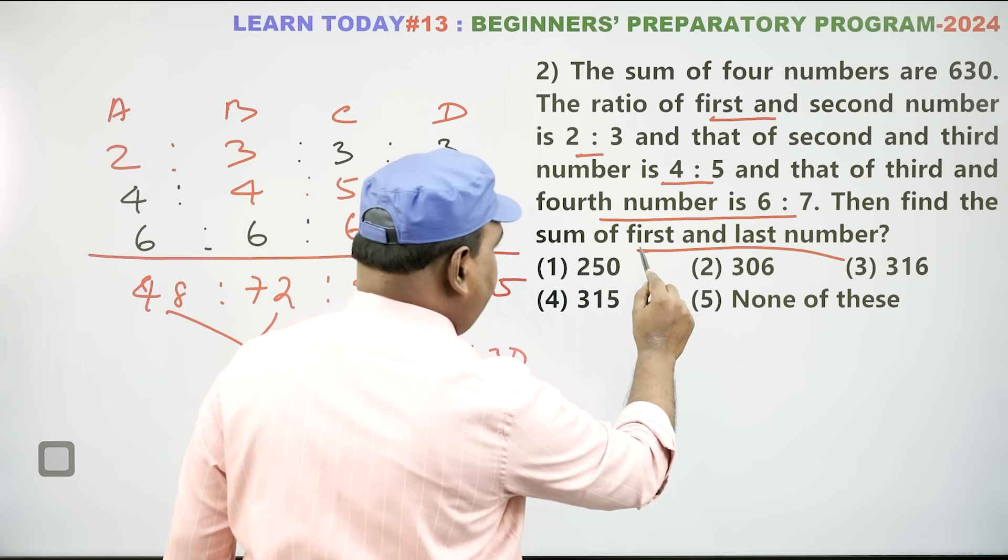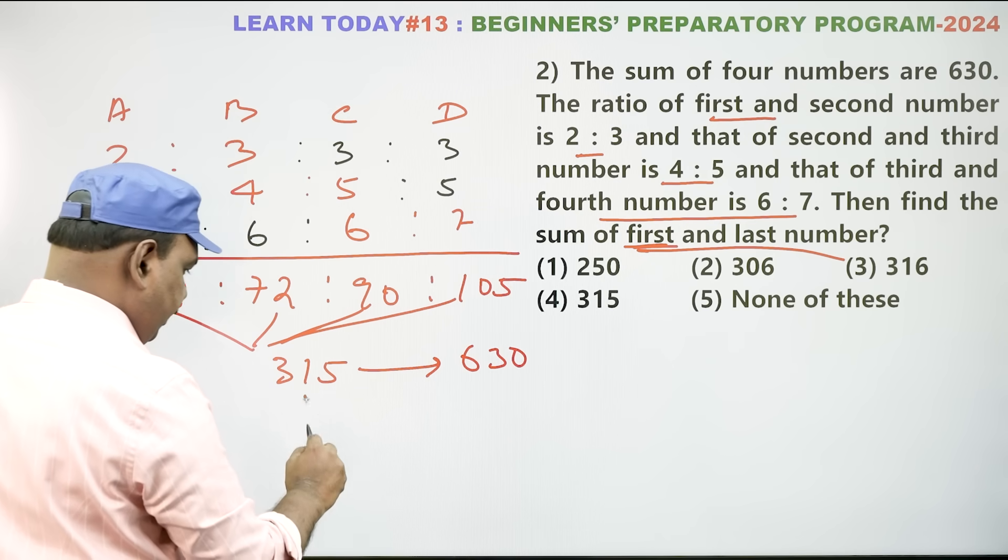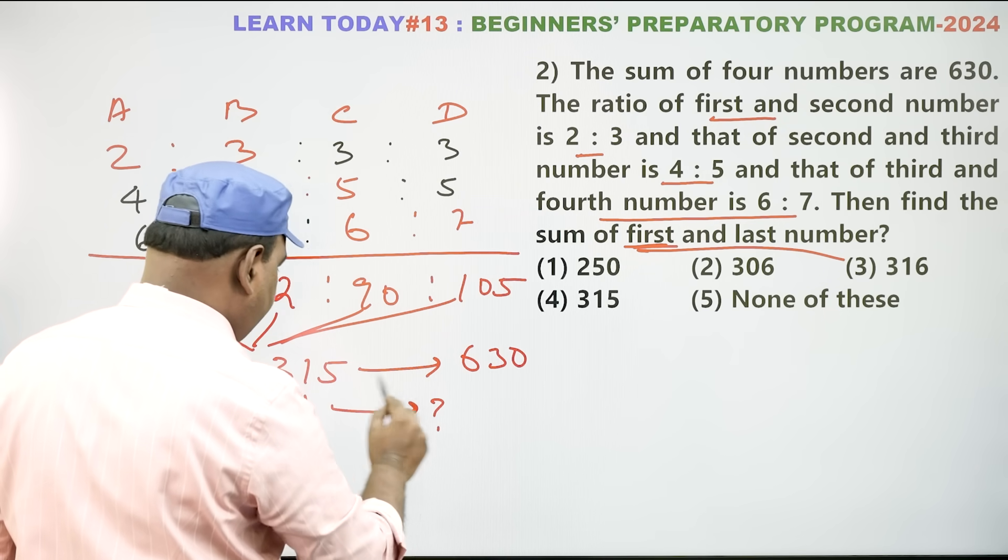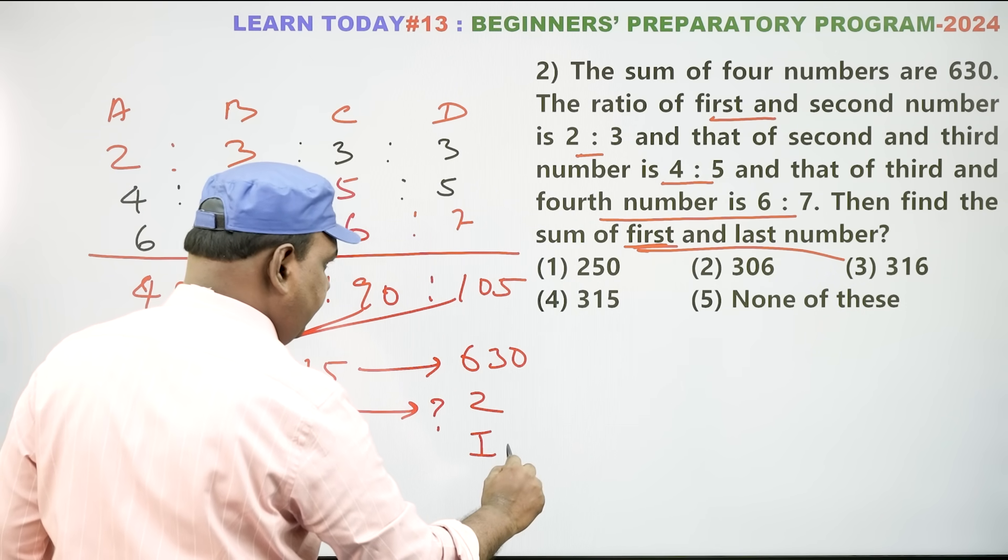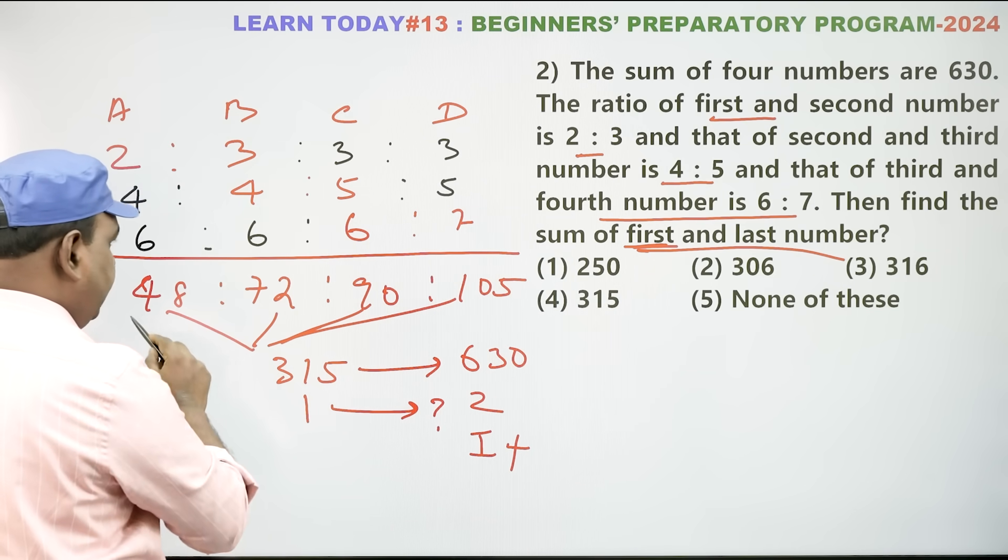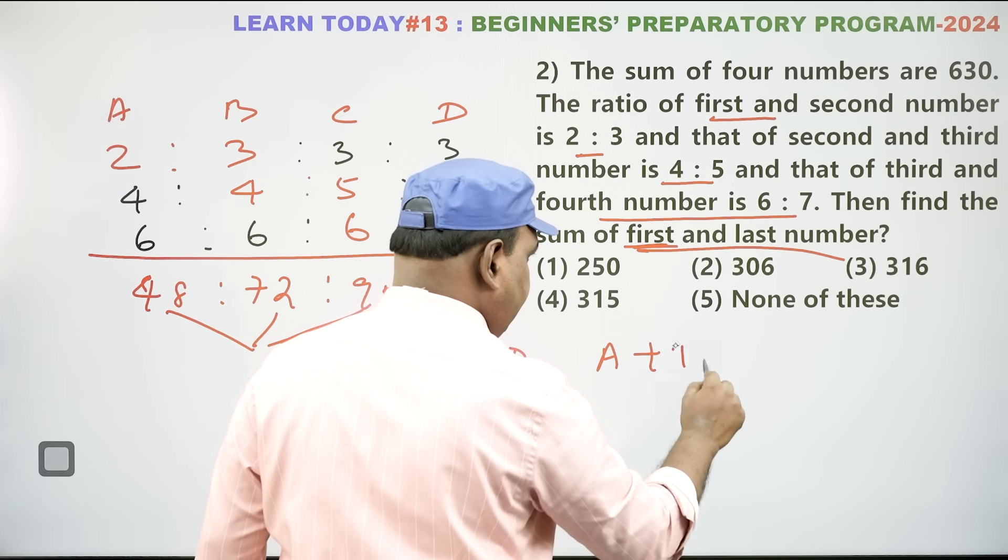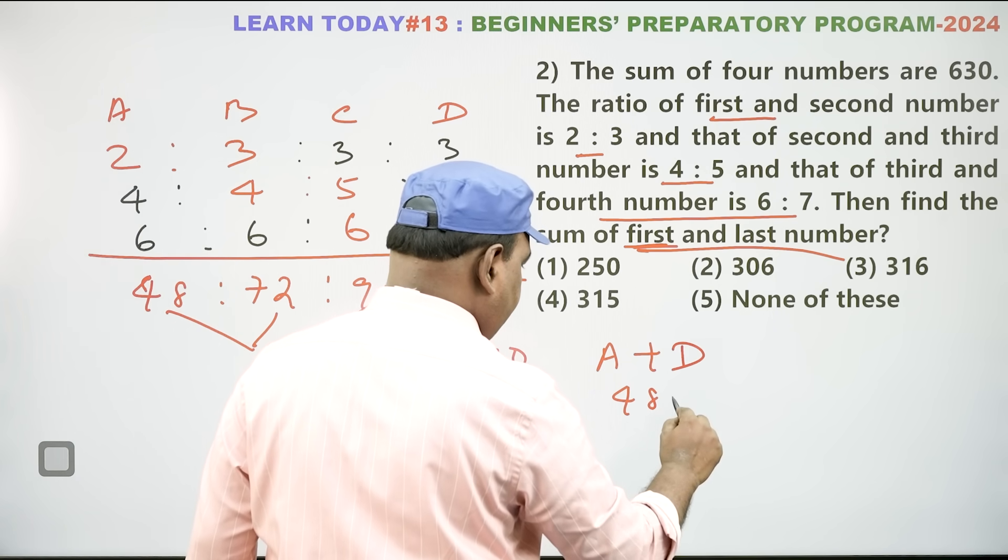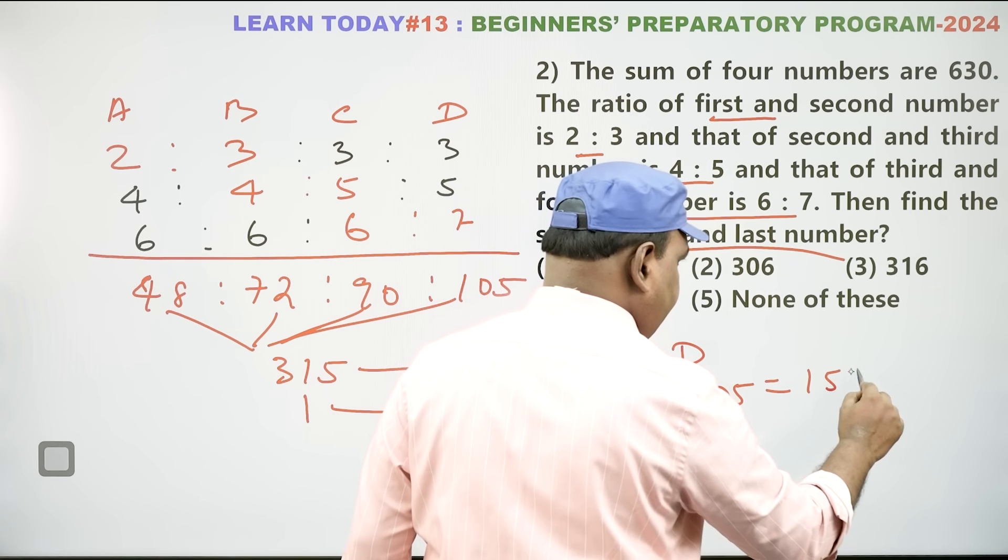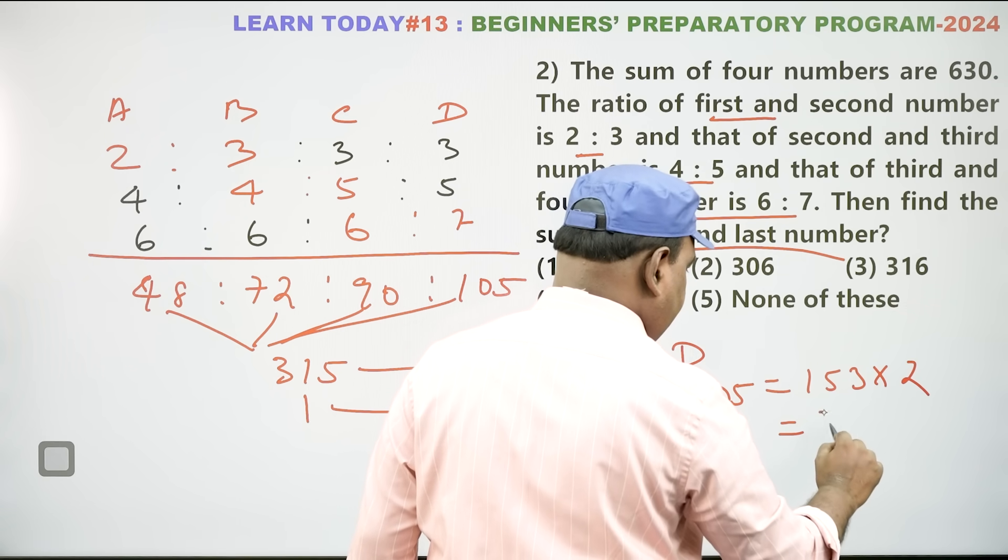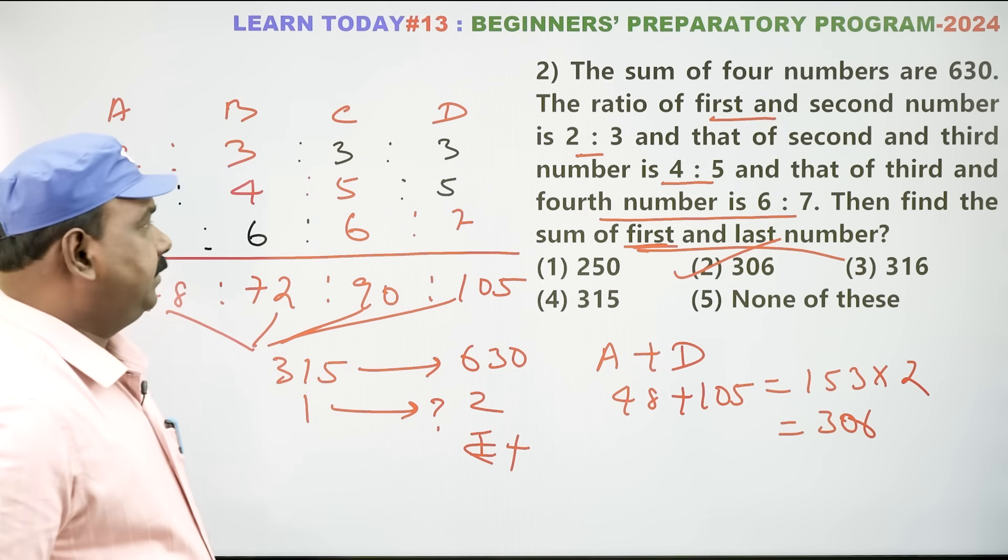Now, find out when it is find the first and last. Sum of the first and last. One part to find out: 140 equal to how many? 2 times is 2. Now, answer it is first and last. First and last means A and D. 48 plus 105. Add: 153 into 2. So, what is the answer now? 306. That is the answer.